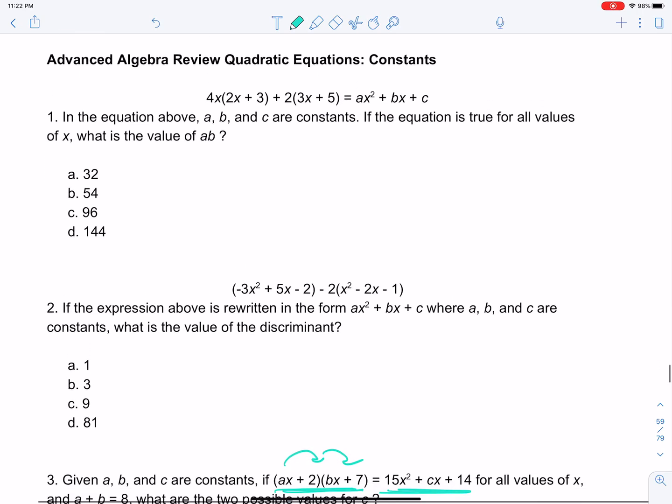So we'll start with this one, which tells us that we have this equation here and it's equal to ax² + bx + c and it's asking us to solve for ab. So it's really about expressing it this way.